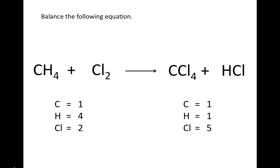Our next step is to balance the number of hydrogen atoms. I'm choosing to start with hydrogen because it occurs in one compound on the reactant side, CH4, and one compound on the product side, HCl. In order to balance the number of hydrogens on the product side, we're going to put a four-coefficient in front of HCl.